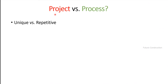A project is completely unique — unique in terms of location, methodology used, facility type, or stakeholder involvement. Construction projects, software projects, R&D projects — all are completely unique. But if you look at a process, it's repetitive in nature. We do the same thing again and again without any modification.